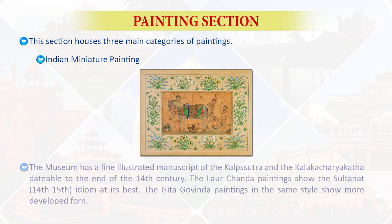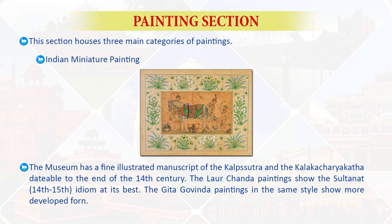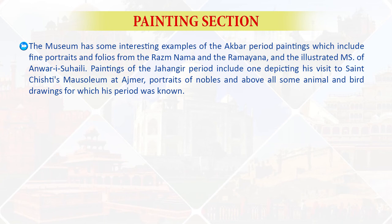The Indian miniature painting collection includes fine illustrated manuscripts of the Kalpasutra and the Kalakacharyakatha, datable to the end of the 14th century. The Lodi-period paintings show the Sultanate idiom at its best, and the Gita Govinda paintings in the same style show a more developed form. The museum has interesting examples of Akbar-period paintings including fine portraits and folios from the Razmnama, the Ramayana, and the illustrated manuscript of Anwar-i-Suhayli. Paintings of the Jahangir period include one depicting his visit to the Saint Chishti mausoleum at Ajmer, portraits of nobles, and animal and bird drawings for which his period was known.